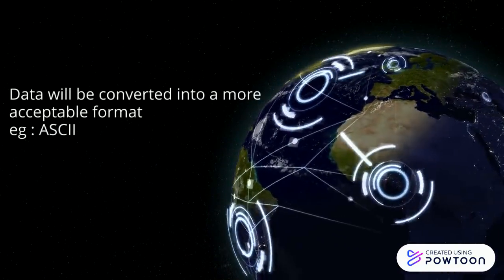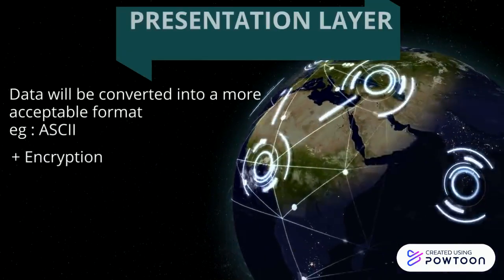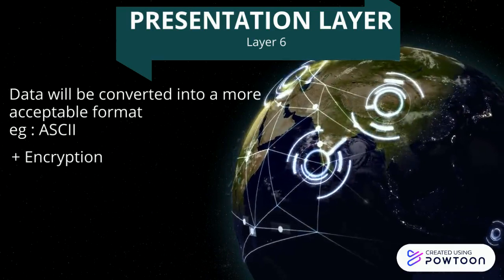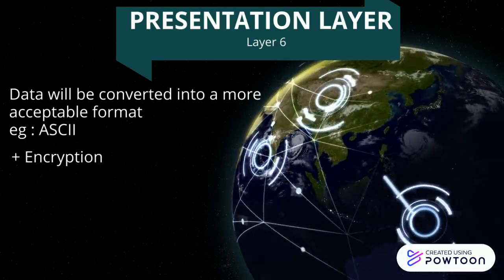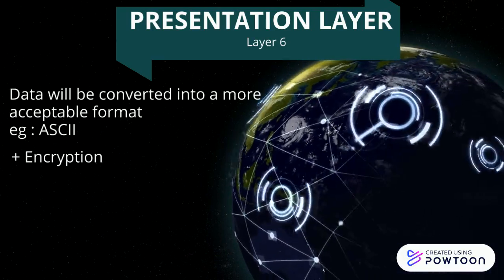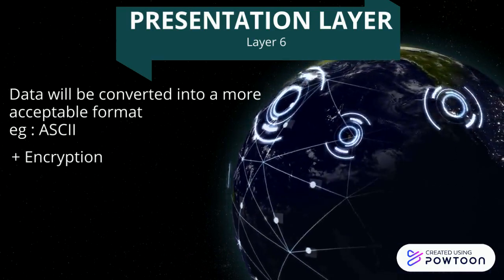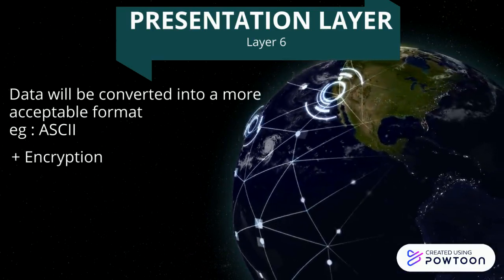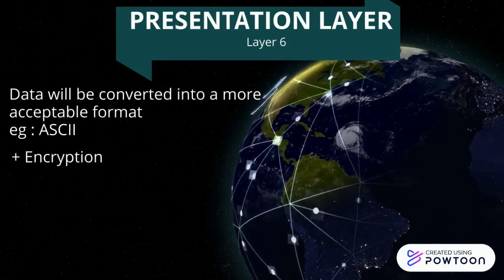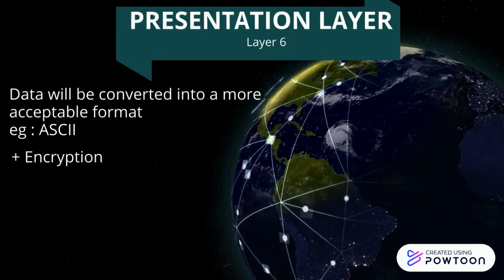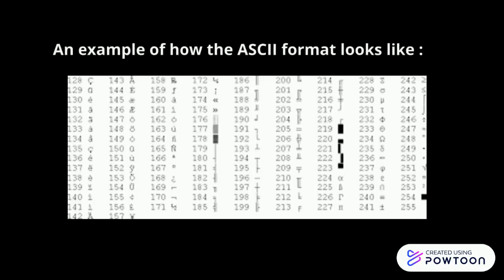This layer is the presentation layer, which is layer 6. In this layer, basically what happens is the translation of the application to network format, or vice versa. The data is transformed into a form that is able to be accepted — for example, it is converted into ASCII. After formatting and encryption, the data is sent across the network to the session layer, which is layer 5.